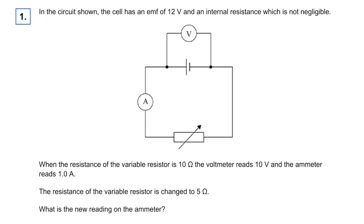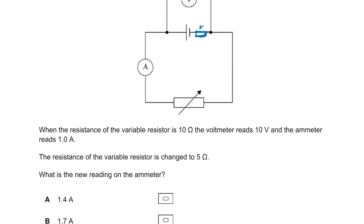Question one: we have an EMF of 12 volts and internal resistance that is not negligible. This is an EMF and internal resistance question. If it said negligible internal resistance, we could ignore it, but there is going to be an internal resistance in here. When the resistance of the variable resistor is 10 ohms, the voltmeter reads 10 volts.